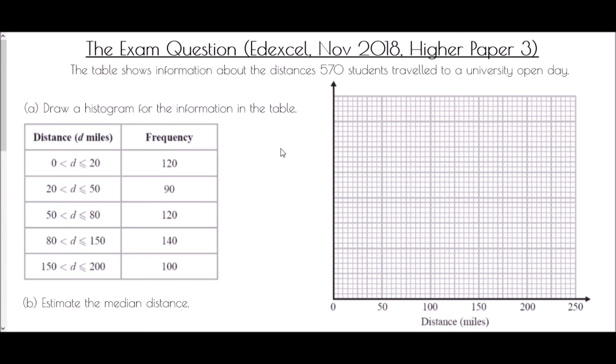And so we end with the exam question and this came from the Edexcel paper in November 2018 and it was on higher paper 3. It says that the table shows information about the distances 570 students travelled to a university open day. We need to draw a histogram for the information in the table.